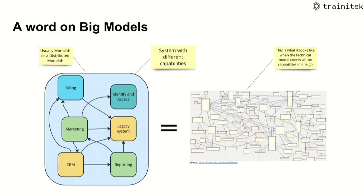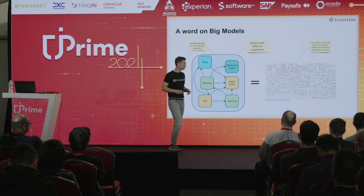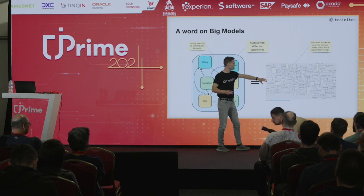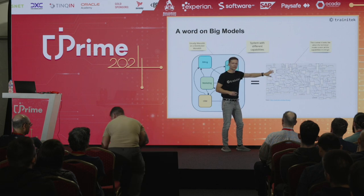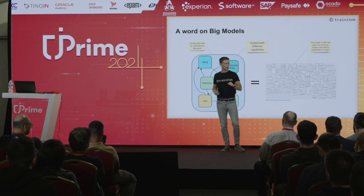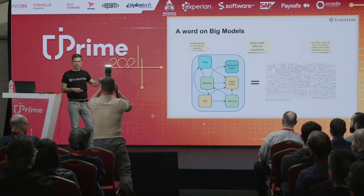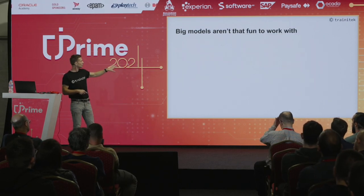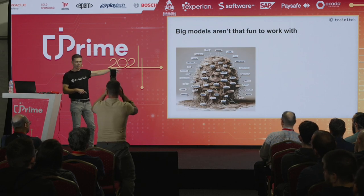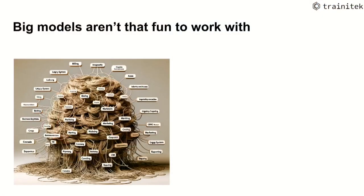Models live in the solution space. Big models — whether a monolith or distributed monolith — look nice from the outside, but everything is tightly coupled. In a SQL database you can't find specific areas that aren't connected with others. It's very hard to work with. You try to touch reports and you break billing.